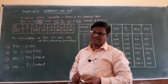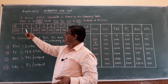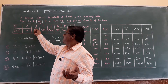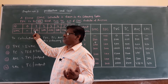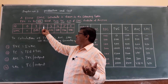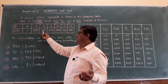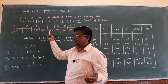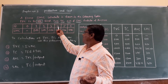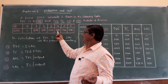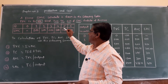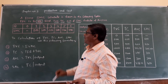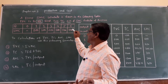The data is as follows: Q = 0, SMC = 0 (dash); Q = 1, SMC = 500; Q = 2, SMC = 300; Q = 3, SMC = 200; Q = 4, SMC = 300; Q = 5, SMC = 500; Q = 6, SMC = 800.